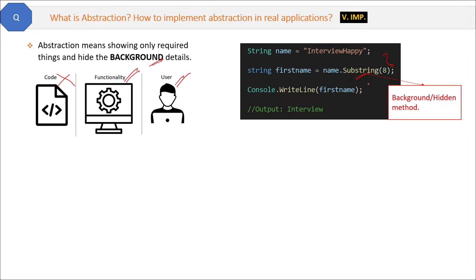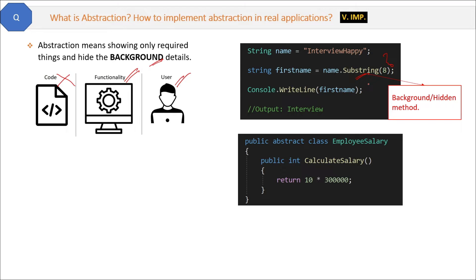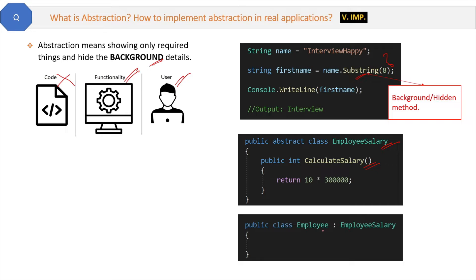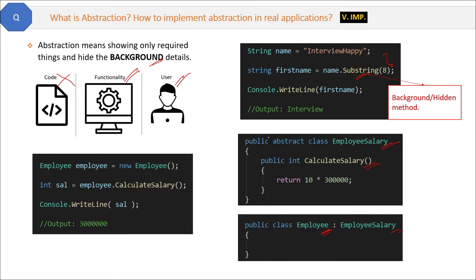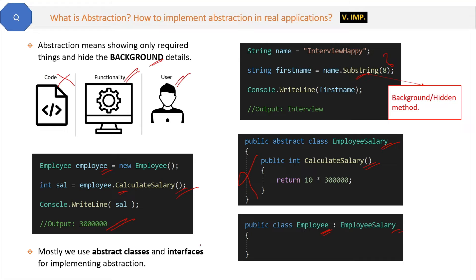One way to implement abstraction is by using abstract classes and interfaces. For example, here is a base abstract class — an EmployeeSalary class — and inside it you have a CalculateSalary method. This class and method can be used by derived classes. When you create the object and use the CalculateSalary method, even if you don't know the internal logic, you can use it properly and get the proper output. The benefit of abstraction is that it makes your program more secure and more structured.